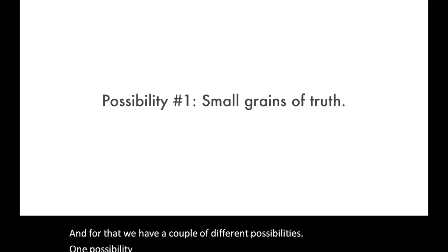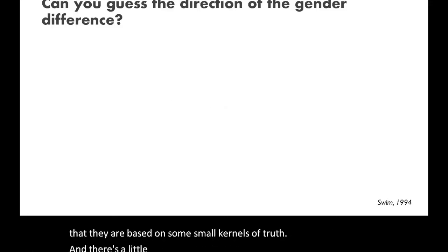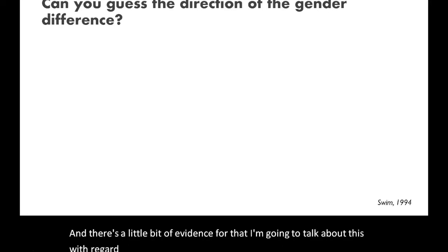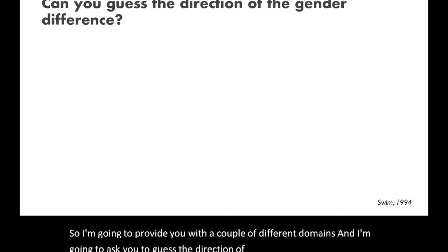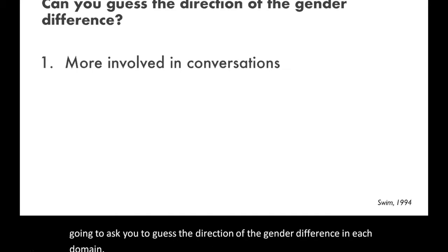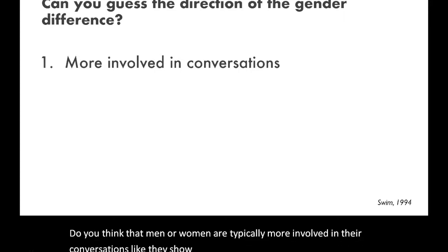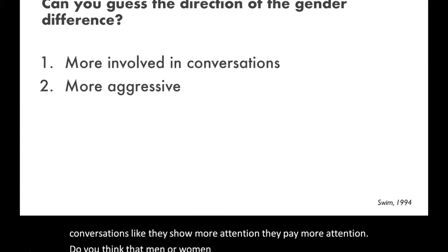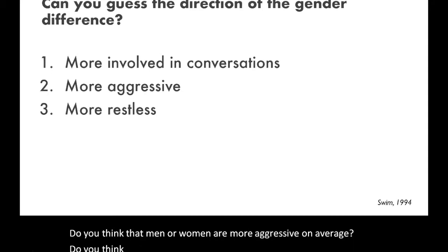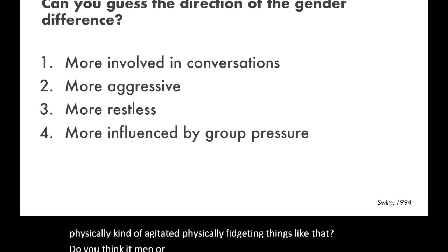One possibility about where we get the content of our stereotypes is that they're based on some small kernels of truth, and there's a little bit of evidence for that. I'm going to talk about this with regard to gender. I'll give you a couple of different domains and ask you to guess the direction of the gender difference. Do you think men or women are typically more involved in their conversations? More aggressive on average? More physically restless or fidgeting? More influenced by group conformity pressure?